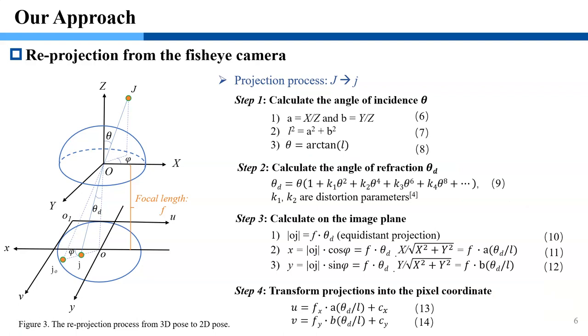This slide shows the fisheye camera model, which projects upper case P to lower case g. There are four steps from equation 6 to 40. We can summarize the process using equation 50. Compared with the pinhole camera model, equation 50 includes theta d, which are related to distortion parameters. Therefore, we need to take distortion parameters into account.